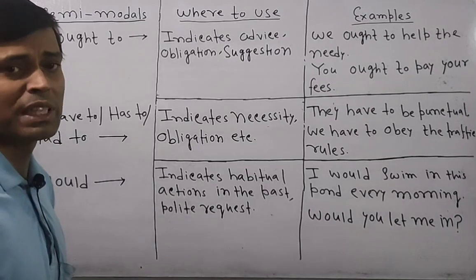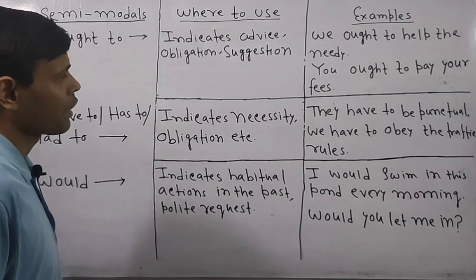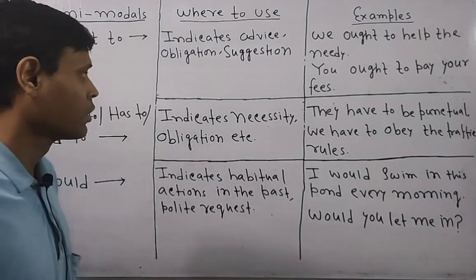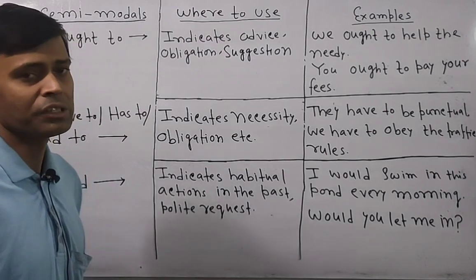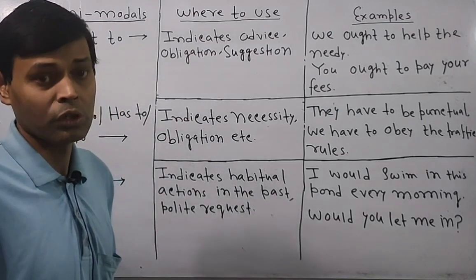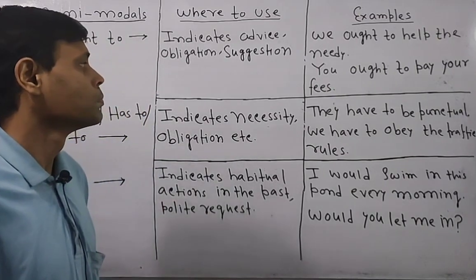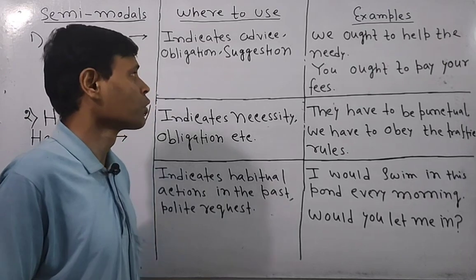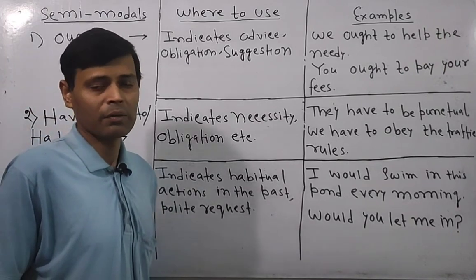These are some rules related to semi-modals: particularly 'ought to,' 'have to,' 'has to,' 'had to,' and 'would.' If you are unable to understand any part of this analysis, you can drop your comments in the comment section. If you find my video helpful, please share it, subscribe to my channel, and hit the notification bell icon. Tomorrow I will come up with another episode with new rules for your competitive exam. Till then, have a very good day.